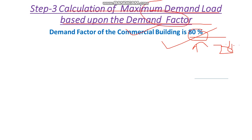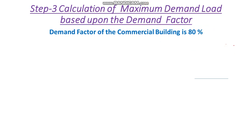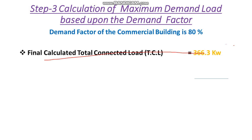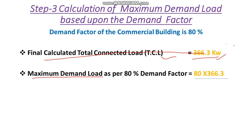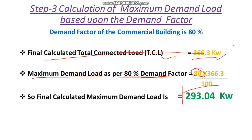We need to size the transformer as per the maximum demand load. Our final calculated total connected load is 366.3 kW, and the demand factor is 80%. So the maximum demand load is 80/100 × 366.3 = 293.04 kW.